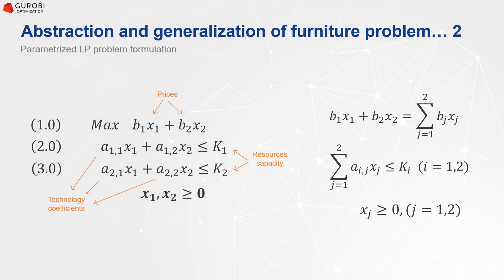The index I represents resources. For I equal to 1 we have the Mahogany capacity constraint, and for I equal to 2 we have the labor constraint. The non-negativity constraints are represented by the index J for the production of tables or chairs.